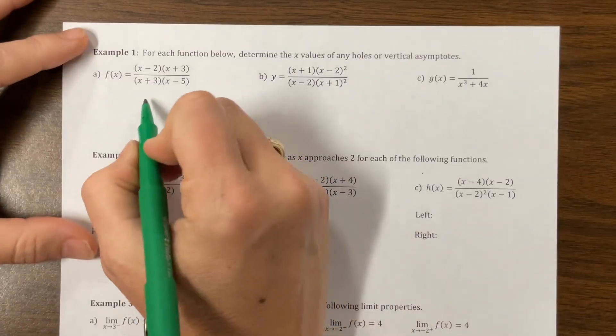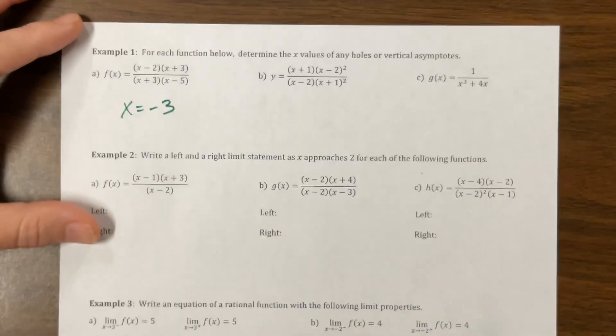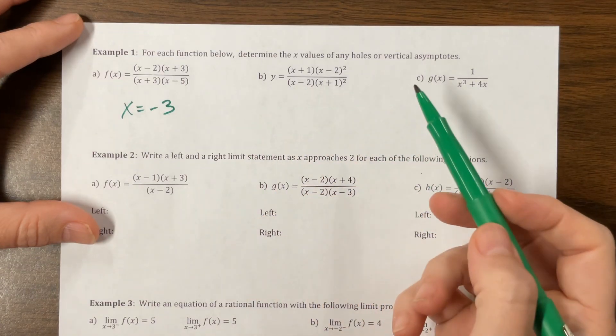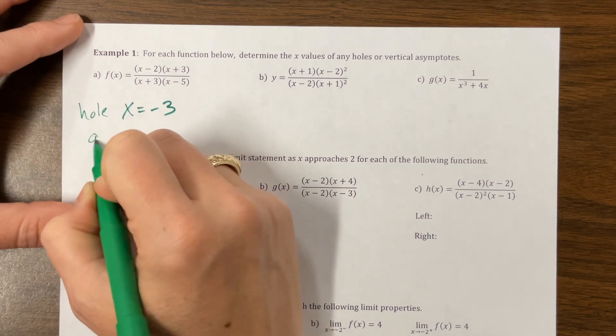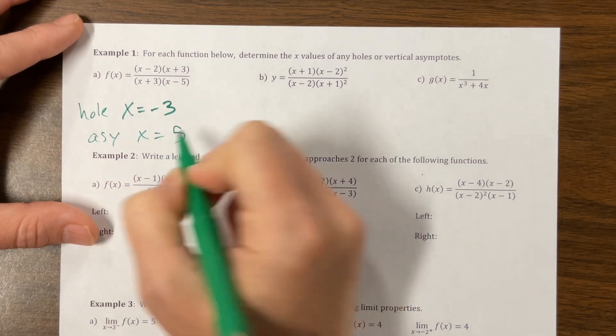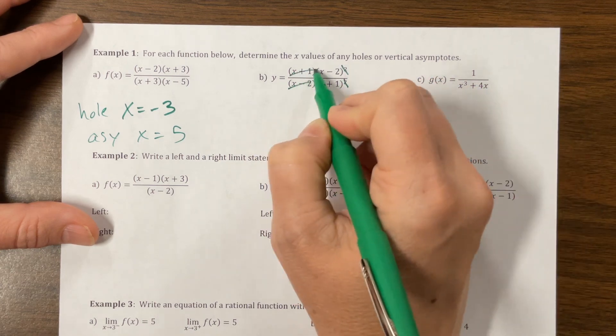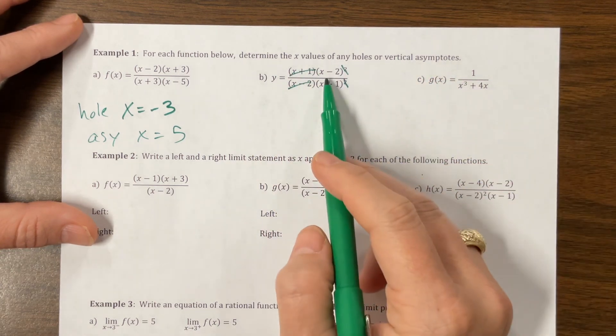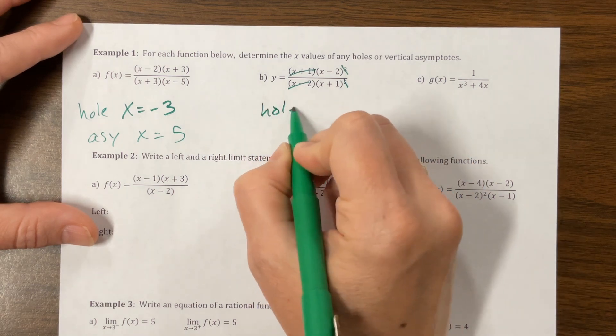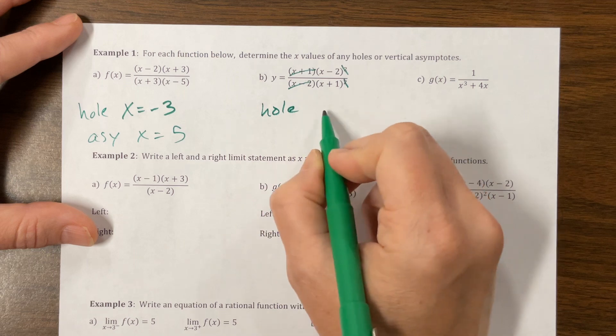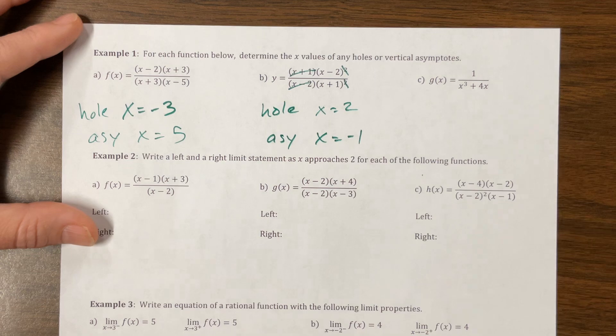All right, on this one, we have a hole. We have a hole at x equals negative 3. So this is a hole. And then we have an asymptote at x equals 5. On this one, this would cancel with that, and one of these would cancel with that. And so this ends up looking like (x minus 2) over (x plus 1). So we have a hole at x equals 2, and we have an asymptote with what's left, and that's x equals negative 1.